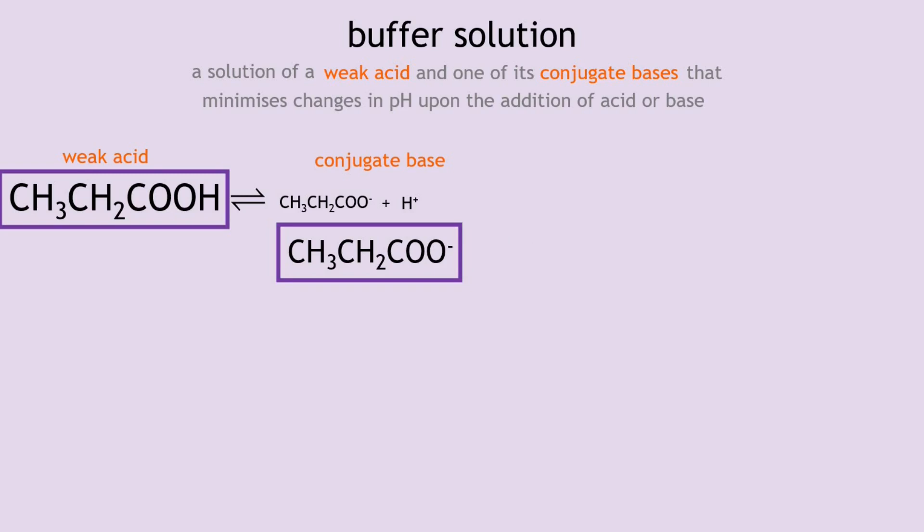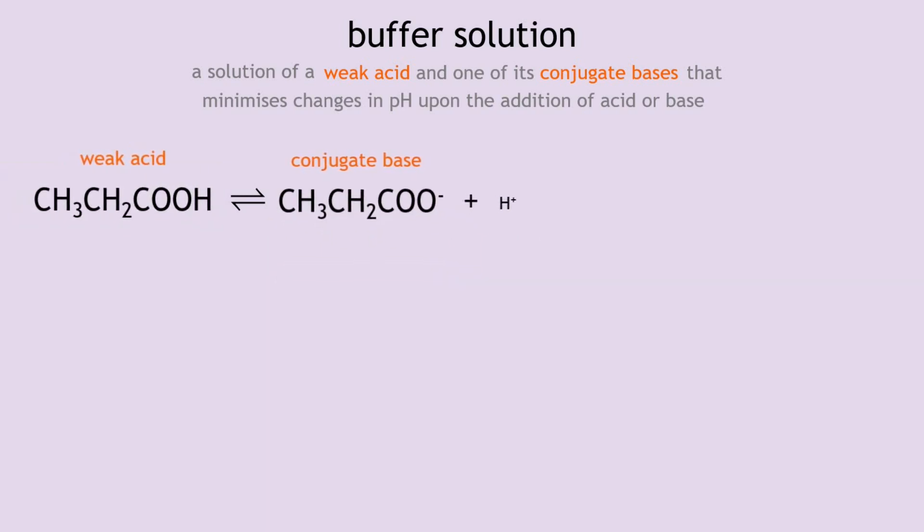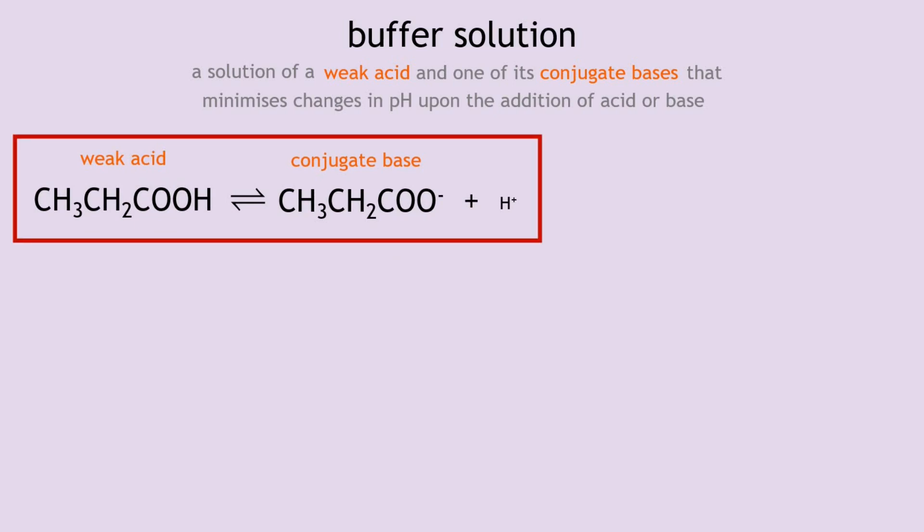If we combine these two equations together we end up with an equilibrium system — this is what we call the buffer solution system. This is the equilibrium that governs how the buffer solution works. Now let's look at the second part of the definition: it is a solution that minimizes changes in pH upon the addition of acid or base.